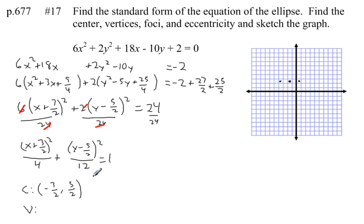My stretch in the y direction is the square root of 12 units. Well, the square root of 12 is somewhere between 3 and 4. It's about 3 and a half. So if I go up 1, 2, 3 and a half, I'll be about here. Down 1, 2, 3 and a half, I'll be about here. So my ellipse will look something like this.